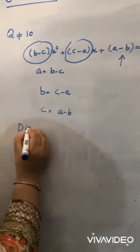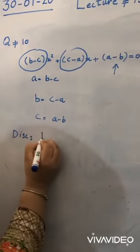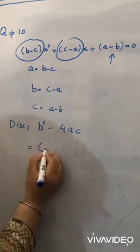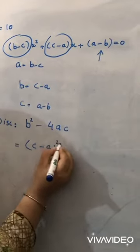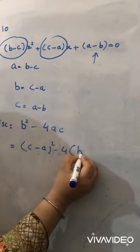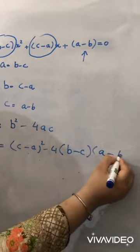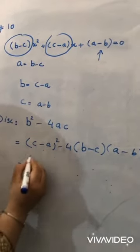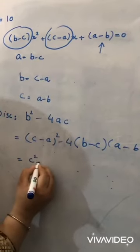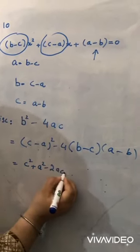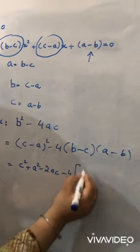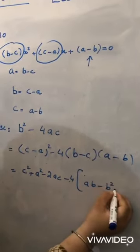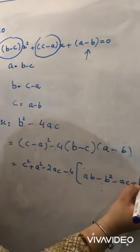The discriminant is b² minus 4ac. We substitute the values: (c minus a)² minus 4 times (b minus c) times (a minus b). By the (a minus b)² identity, we expand this to c² plus a² minus 2ac minus 4 times the product of the two brackets.